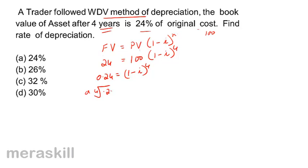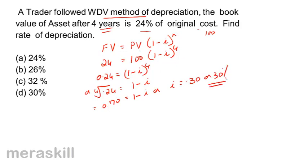Therefore, the fourth root of 0.24 equals (1 − i). Taking the square root twice of 0.24 gives us 0.6999, approximately 0.70, which equals (1 − i). So i = 0.30, or 30%. The rate of depreciation is 30%.